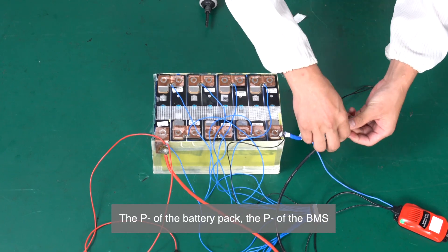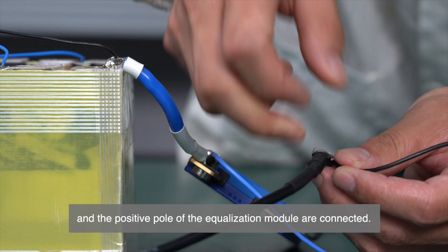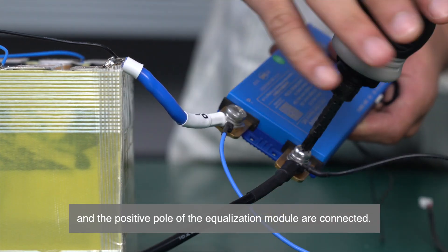The P- of the battery pack, the P- of the BMS, and the positive pole of the equalization module are connected.